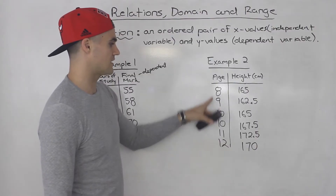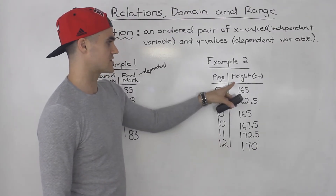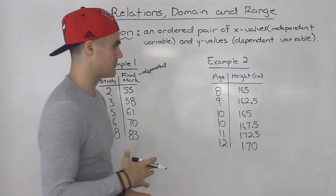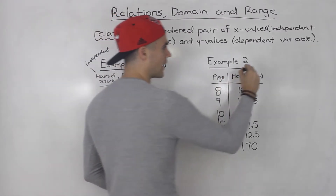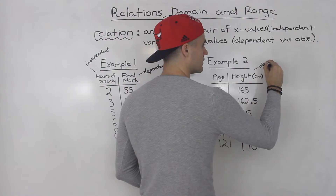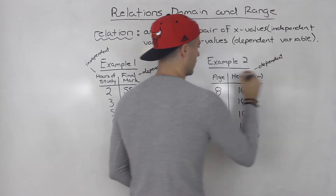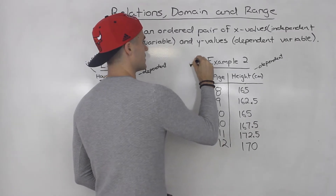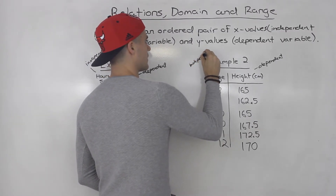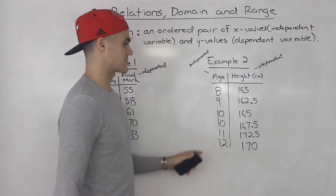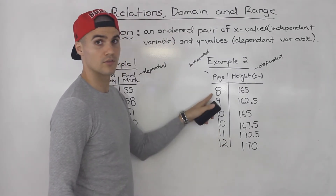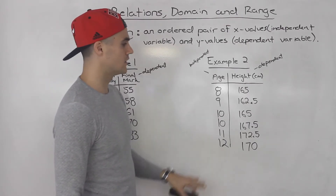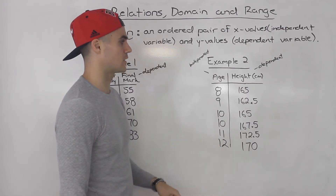What about example two? We have the age versus the height. Which one is the independent variable and which one is the dependent? Well, the height is usually dependent on the age. So the age is the independent, and the height is the dependent. Especially when you're dealing with ages around the 8 to 12 range — the older someone is getting, usually the taller they are going to be.